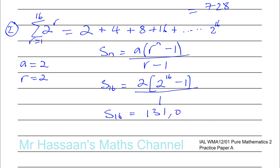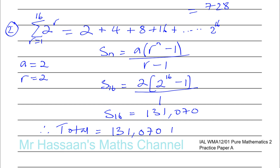So the total is going to be 131,070 plus 728, which gives us a grand total of 131,798. And yes — that's exactly what we had to show.